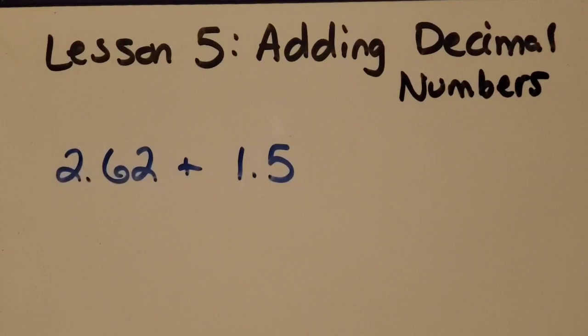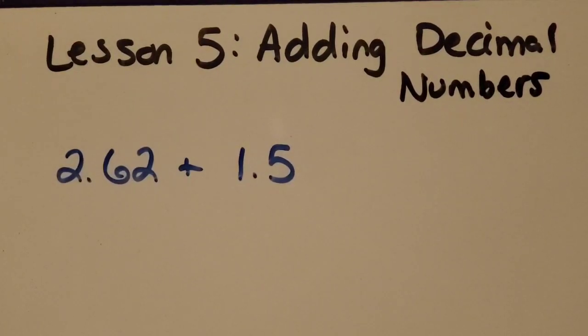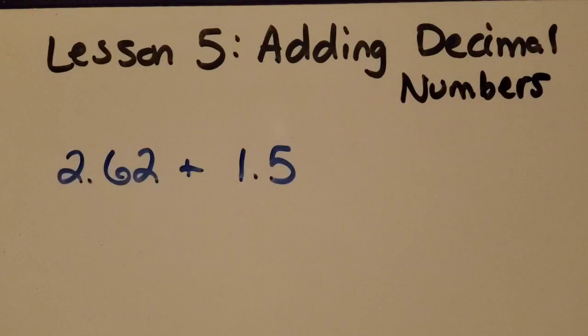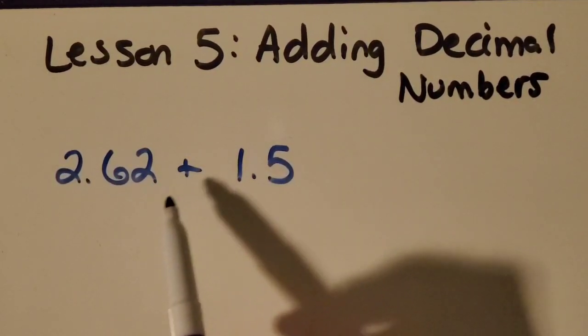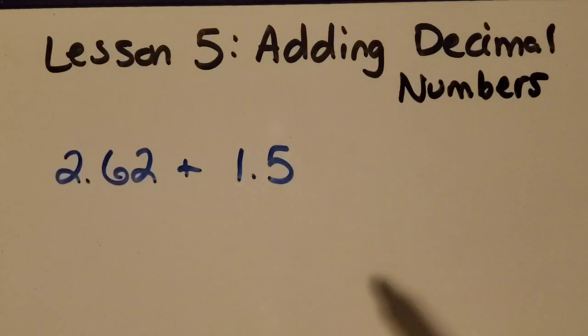Welcome back everyone. This is our lesson five about adding decimal numbers. I've given us a problem to get started with: 2 and 62 hundredths plus 1 and 5 tenths.